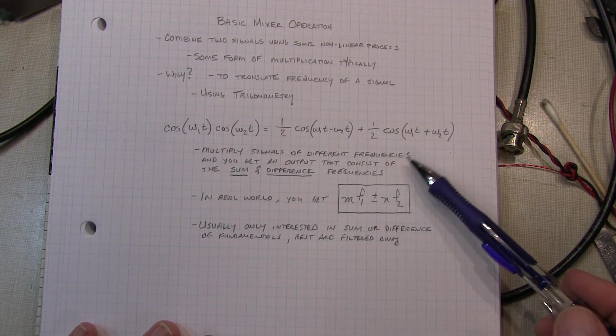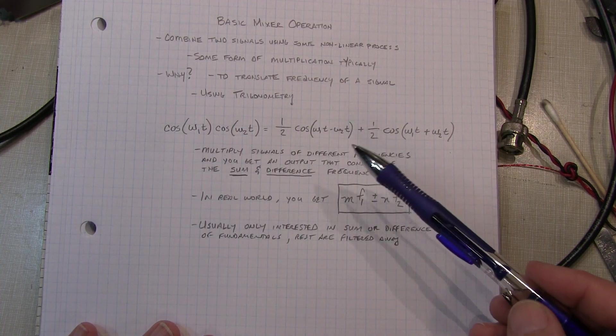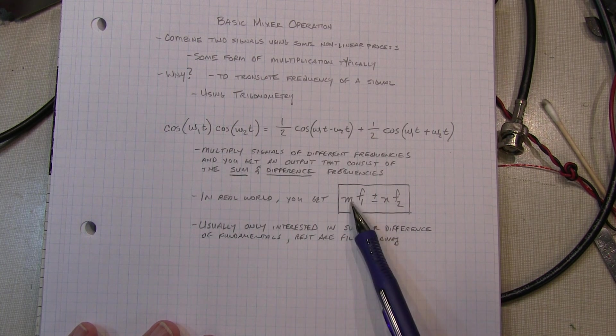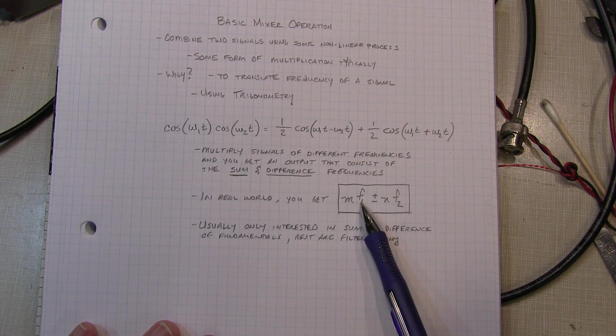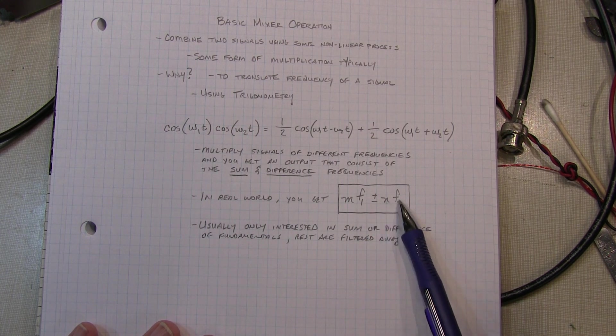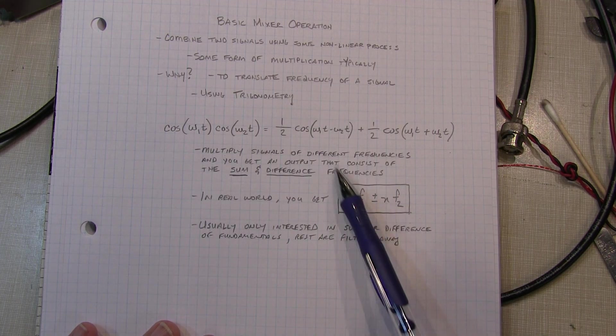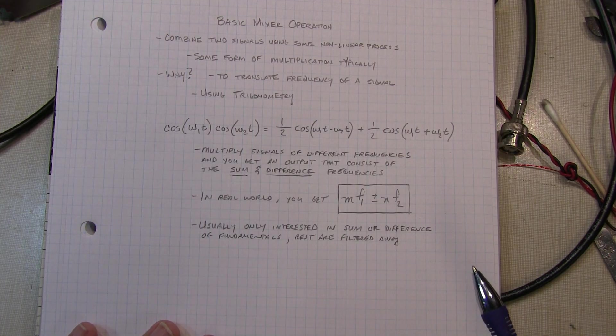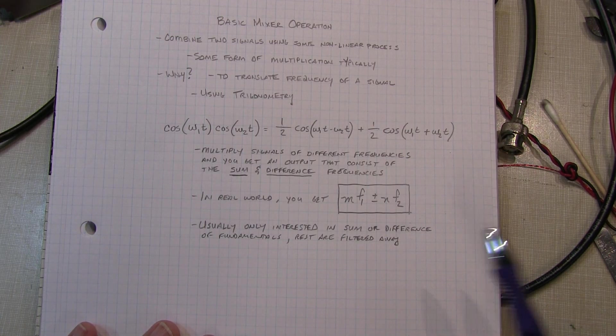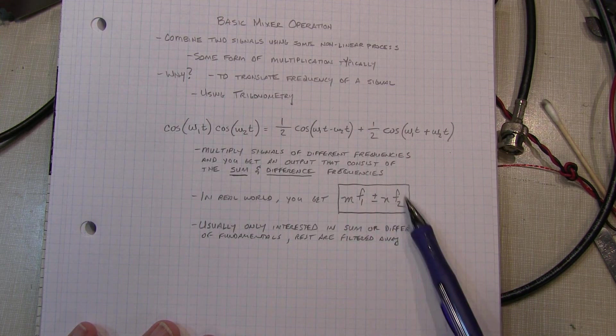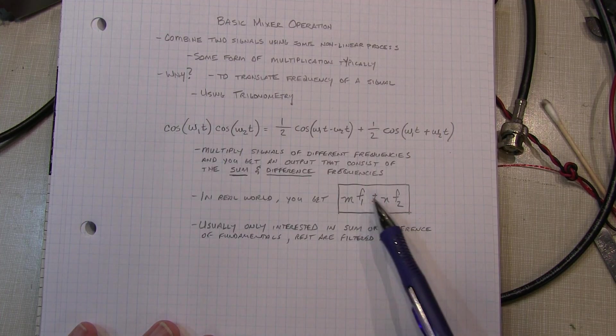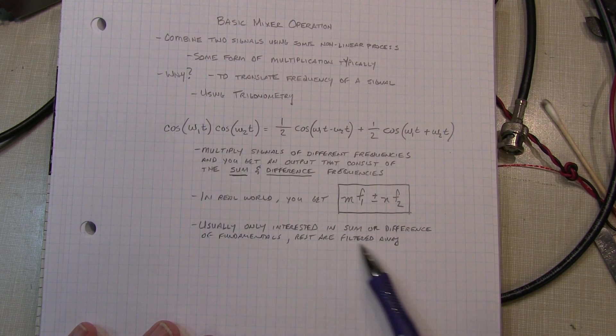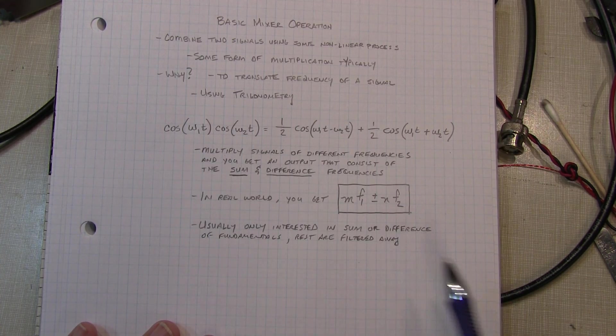Now the reality is that with nonlinearities you're also going to get harmonics of those two original frequencies. So in the real world you typically get some quantity times f1 plus or minus some quantity times f2. So you're going to get a number of different sums and differences of the fundamental frequencies and the harmonics. Normally you're only interested in one of these results, maybe f1 minus f2 or maybe f1 plus f2. And usually what will happen in the circuit is that we'll filter some of the others away.